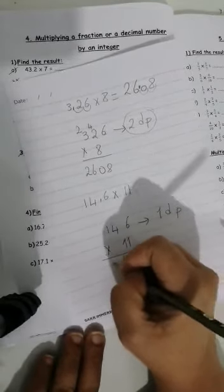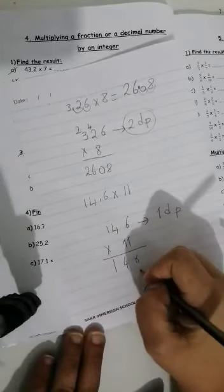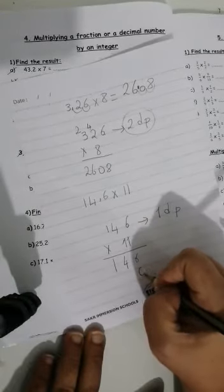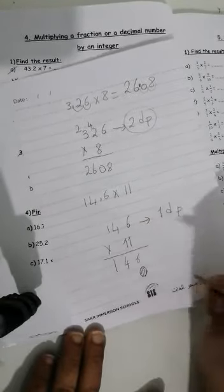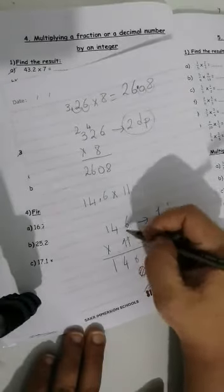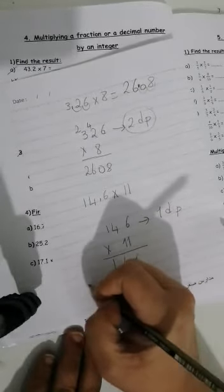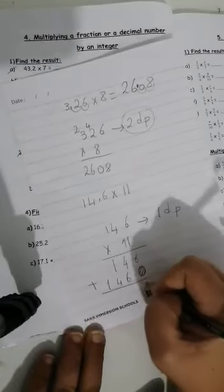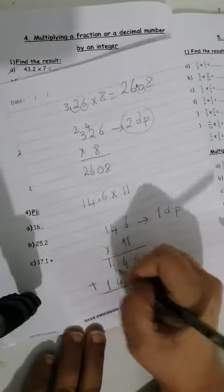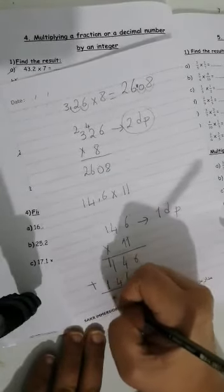1 times 6, 6, 4, 1. What will I do here? Remember this? My crazy zero. Don't forget it. And then again, 6, 4, 1 plus 6, 0, carry 1, 6, 1.